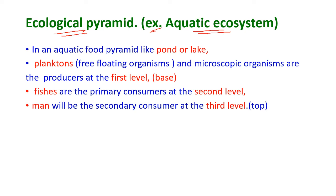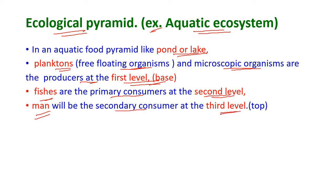In an aquatic food pyramid — such as a pond or lake — the planktons, that is the free-floating organisms found on the surface of water and microscopic organisms, are the producers at the first or base level. Fishes are the primary consumers forming the second level. And man will be the secondary consumer at the third or top level in an aquatic ecosystem.